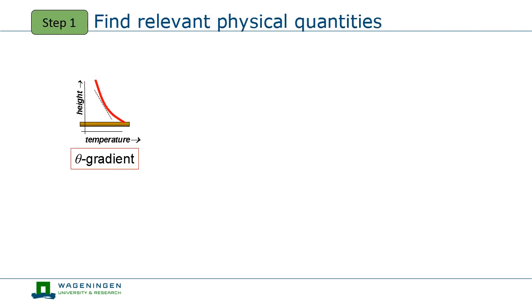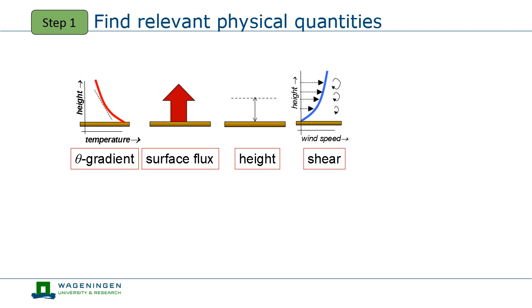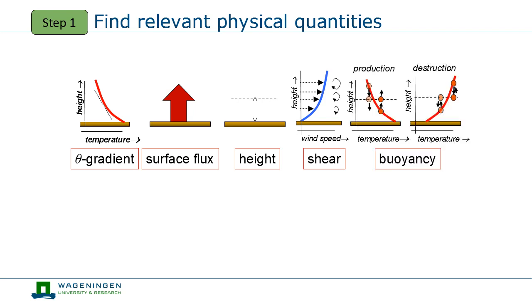What does the vertical temperature gradient depend on? First, on the surface heat flux — with a larger flux, you expect a larger vertical contrast. And when the heat flux would be negative, you would expect an increase of temperature with height rather than a decrease. Furthermore, the gradient may depend on height; close to the surface, vertical temperature differences are usually larger than further away. The vertical gradient will also depend on the amount of mixing, or the intensity of turbulence. This intensity depends both on the production of turbulence by shear and on the production or destruction of turbulence by buoyancy. Now that our list of relevant quantities is complete, it is time to construct dimensionless groups.